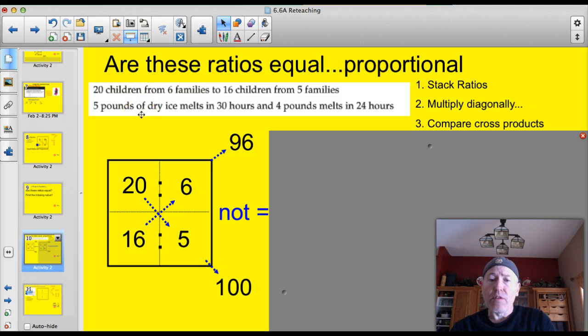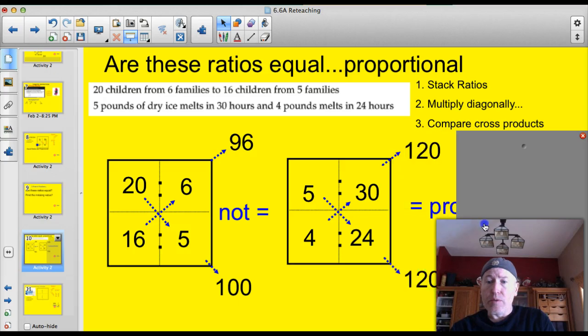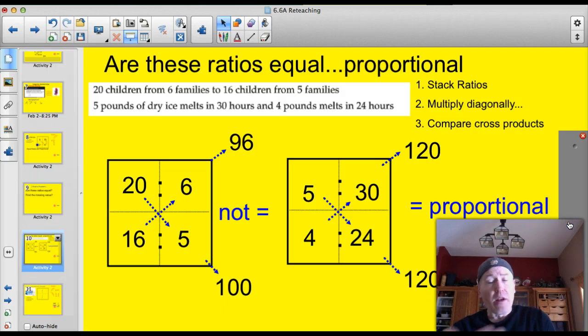You try this one here. Go ahead. Let's see how you did. If you fill the numbers into the box, you did 5 pounds of dry ice in 38 hours. 4 pounds in 24. Then you multiplied the cross products and you got 120 for each. These are equal. These are proportional. Very simple. You pretty comfortable with that? I think so. Let's move on.